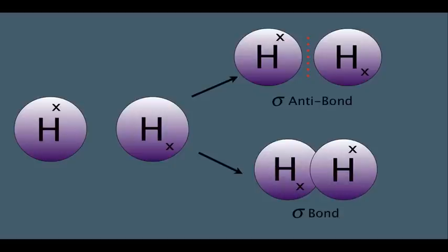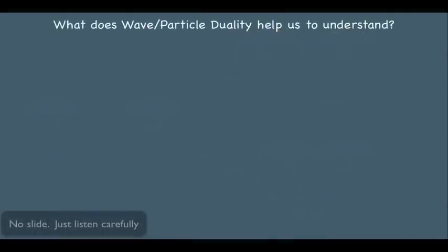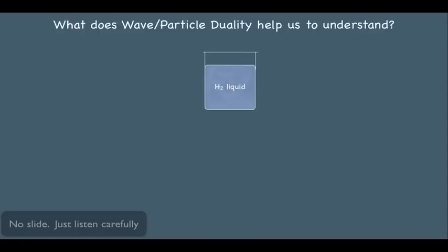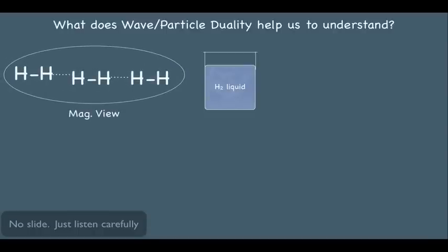Why do we need to understand that electrons are both wave and particle? There are times when we want to understand how a molecule behaves — sometimes the explanation lies in treating electrons as particles, and sometimes it involves treating them as waves. For example, consider H2 liquid. H2 normally exists as a gas. If H2 is existing as a liquid, it means the molecules are held together by intermolecular forces. However, that seems improbable because the H2 molecule has no polarity — so there simply shouldn't be any attraction between two H2 molecules. Yet H2 in liquid form does exist at certain temperatures and pressures.